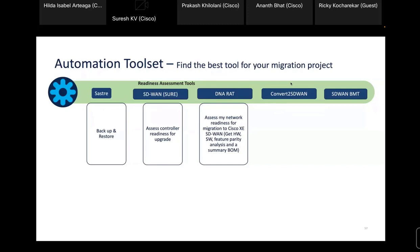The third tool is DNA RAT. Once you've handled the controller part — taking backups and checking capacity — now we go to the endpoints: the actual vEdge devices. DNA RAT provides feature parity and hardware compatibility analysis, and gives you a summary of the equivalent Catalyst platforms compared to your vEdge hardware. These three tools — Sahasri, vManage Show Tool, and DNA RAT — are collectively called readiness tools, and they help you before you start any migration.